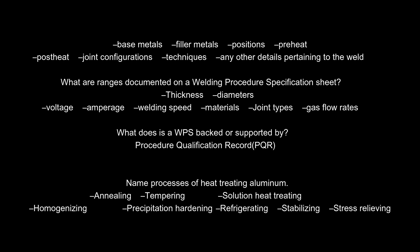What are the ranges documented on a welding procedure specification sheet? Thickness, diameters, voltage, amperage, welding speed, materials, joint types, and gas flow rates. What is a WPS backed or supported by? A procedure qualification record, PQR. Name the processes of heat-treating aluminum. Annealing, tempering, solution heat-treating, homogenizing, precipitation hardening, refrigerating, stabilizing, stress-relieving.